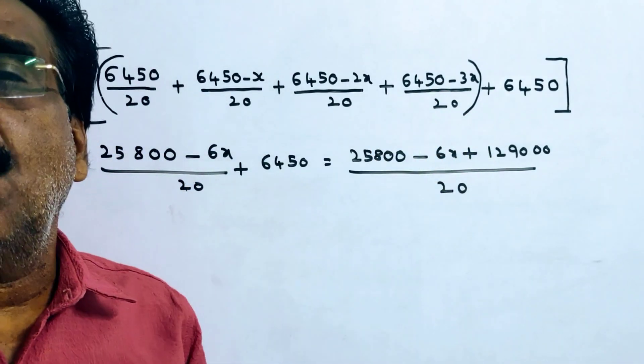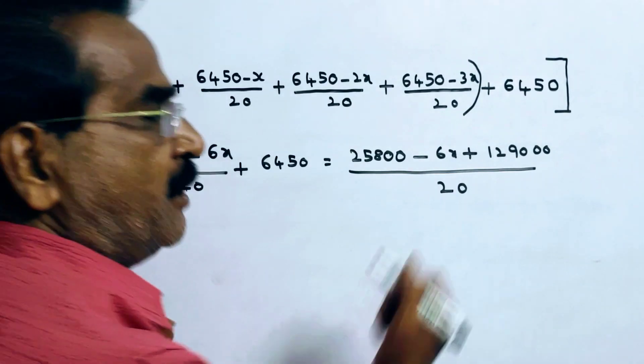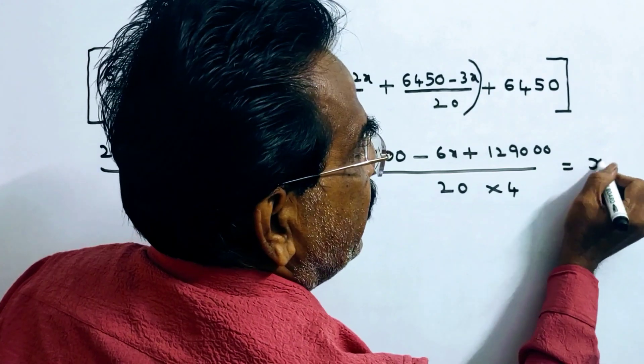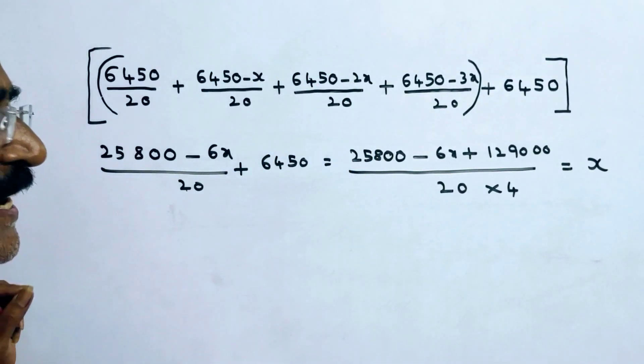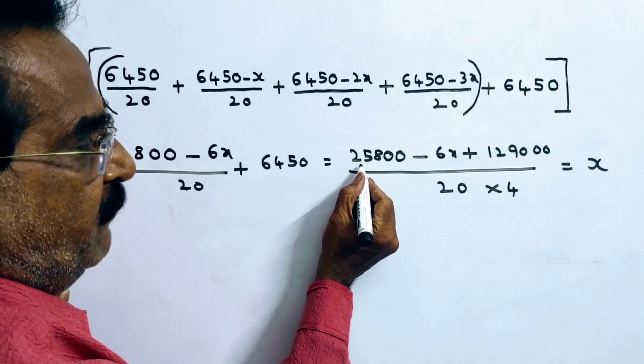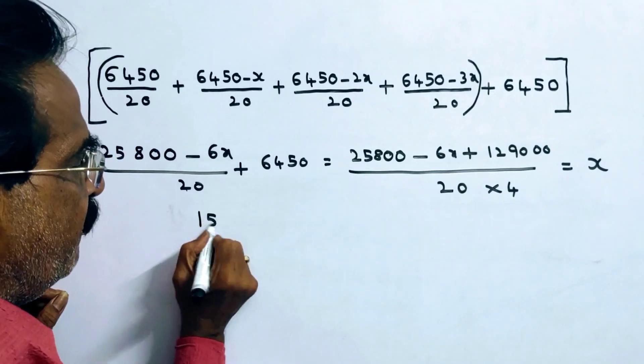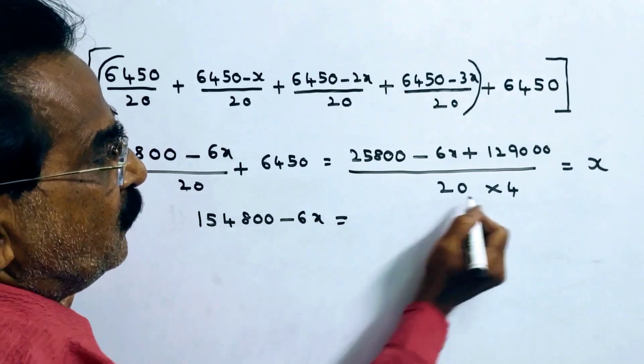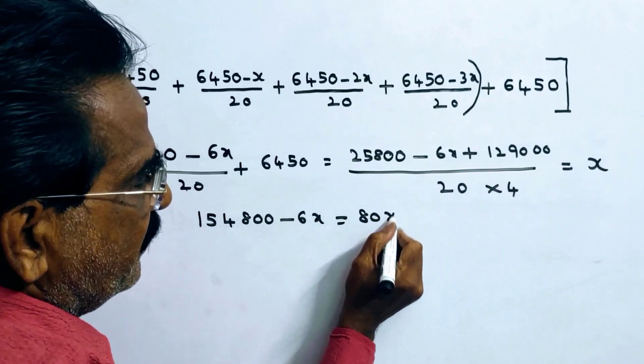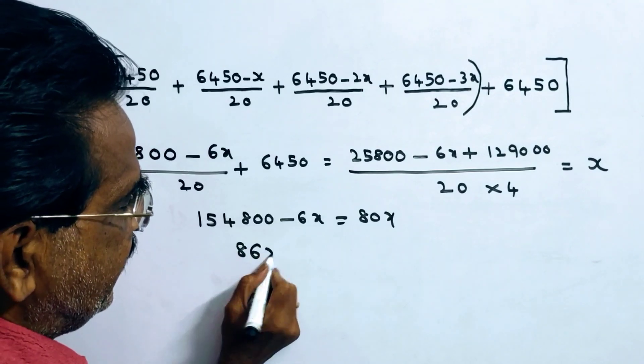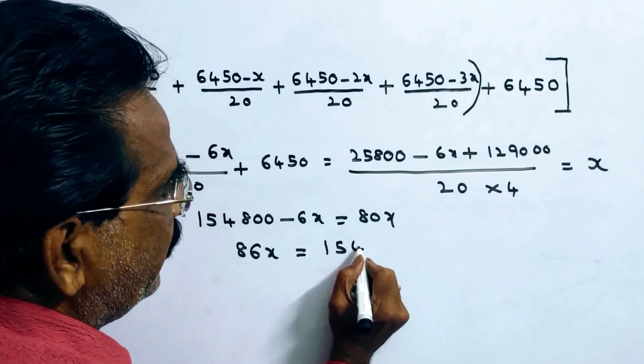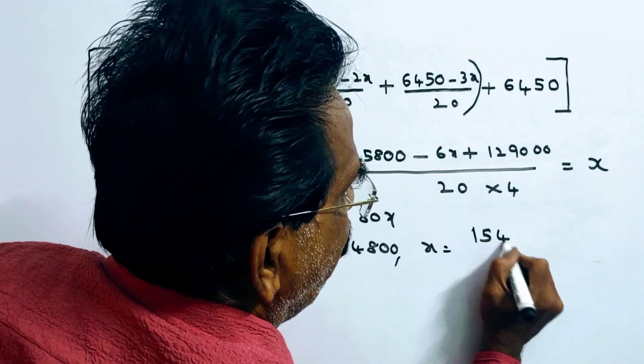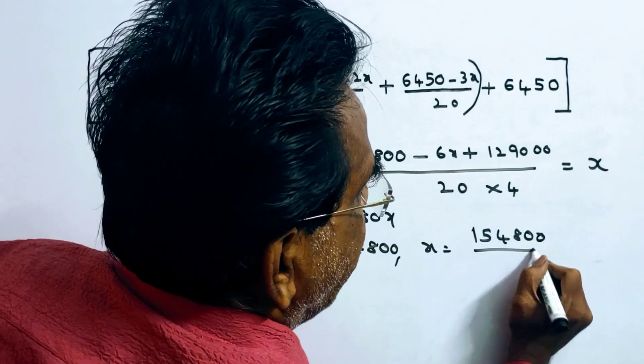He wants to pay this amount in 4 equal annual installments. So dividing by 4, we get 154,800 minus 6X by 4 equals the equal annual installment X. Therefore, 154,800 minus 6X equals 4X, which gives us 86X equals 154,800. So X equals 154,800 divided by 86.